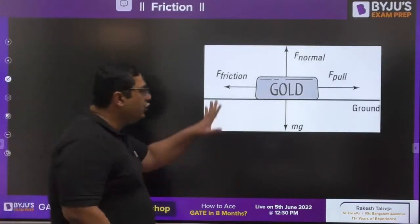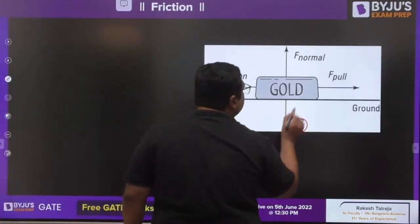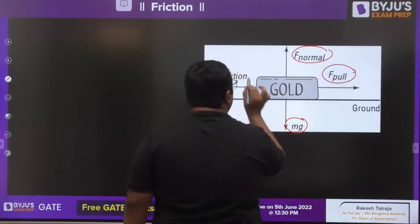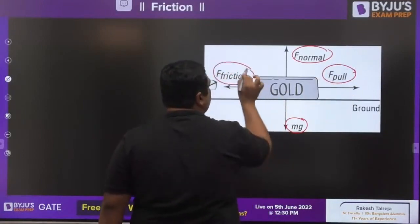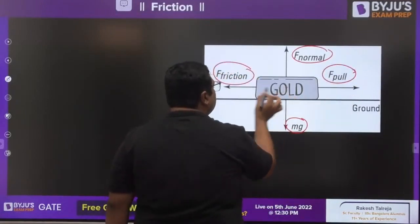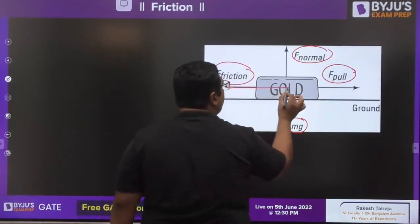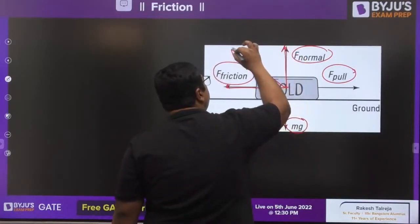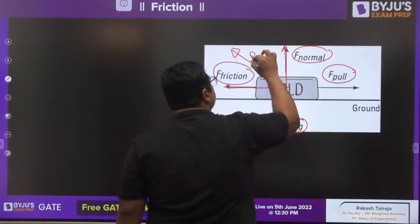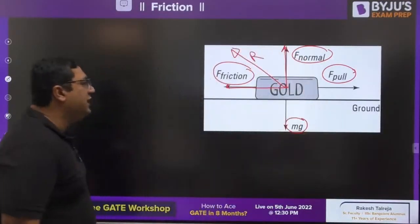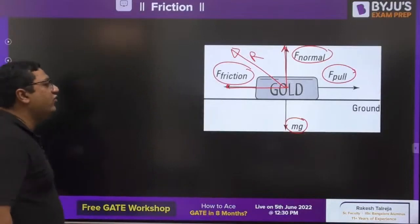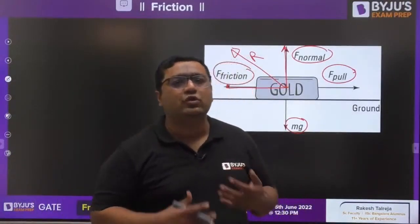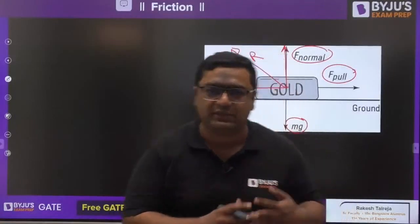This figure shows mg weight acting downward and normal reaction acting upward. When you apply a force, friction will also be acting. So friction is the horizontal component and normal reaction is the vertical component. The net contact force is the resultant of these two. Both friction and normal reaction come because of the contact present between two surfaces.